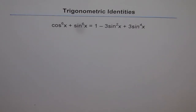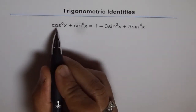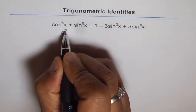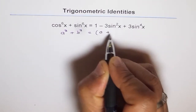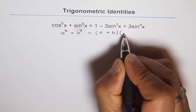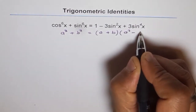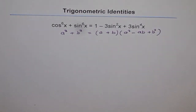We will use the formula a cube plus b cube. Let me write down that formula first for you. We could write this as a cube plus b cube form. The formula is a cube plus b cube equals to a plus b times a square minus ab plus b square. That's the formula for a cube plus b cube.